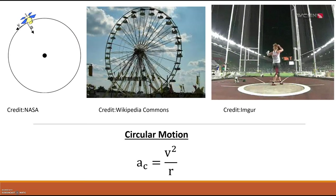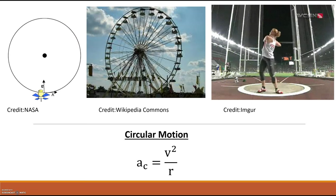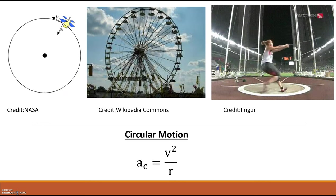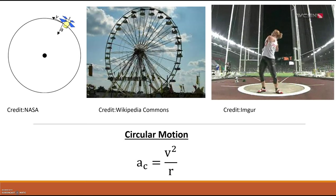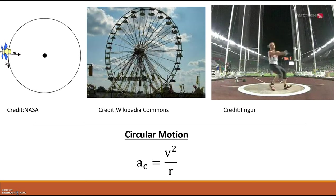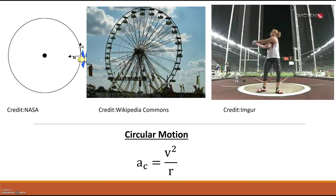Another example of circular motion is with sports. Here's a hammer throw in track and field. The ball is moving around in the circle. The girl throwing has to exert a force inward to keep that ball in that circular path.